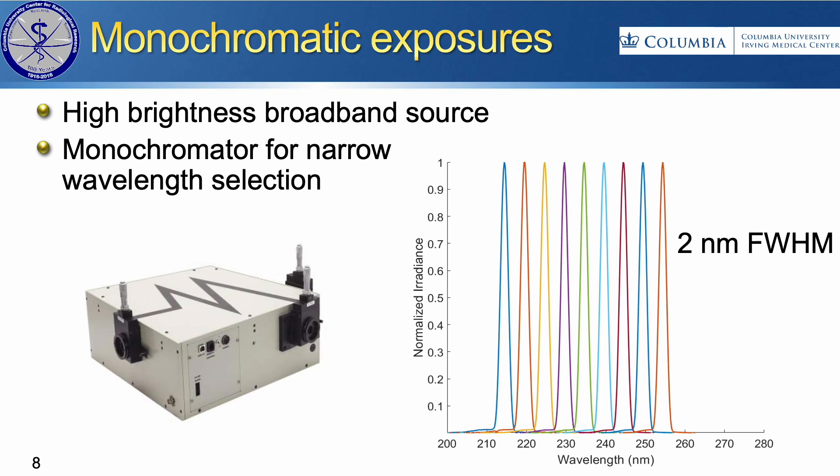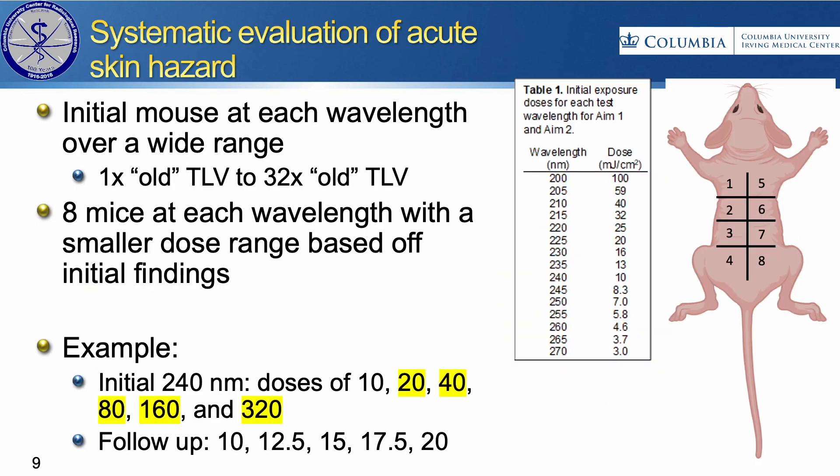The goal of our study is to find the threshold dose for any wavelength throughout the UVC. To do these studies, we're using a monochromatic system to get two nanometer full width half max exposures from 200 up to 270 nanometers. Our exposure plan is outlined on this slide.